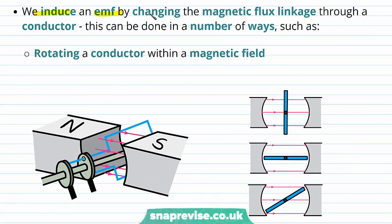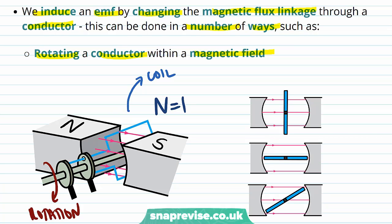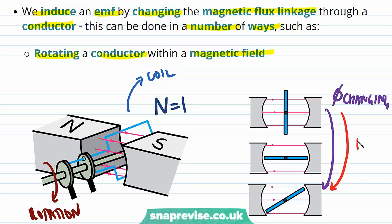We induce an EMF by changing the magnetic flux linkage through a conductor. This can be done in a number of ways, such as first of all rotating a conductor within a magnetic field. Here we have a coil with number of turns N equals 1, and it's rotating in a magnetic field. Therefore, over time, the magnetic flux is going to change, and the magnetic flux linkage is also going to change. Although flux linkage applies to coils, substituting N equals 1 gives us the flux. We usually just say flux linkage.